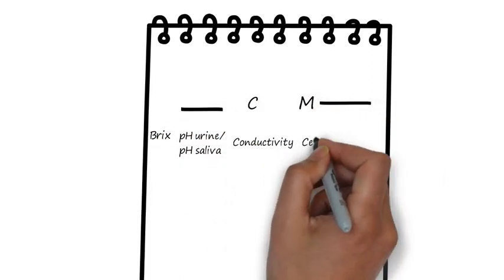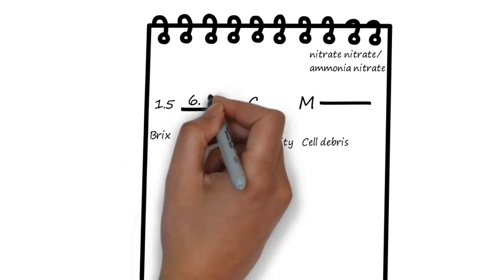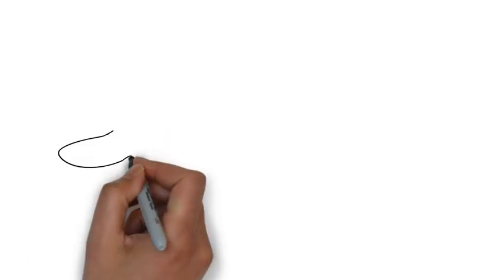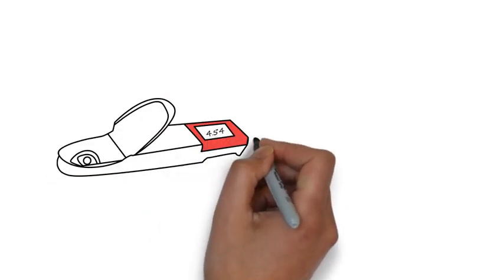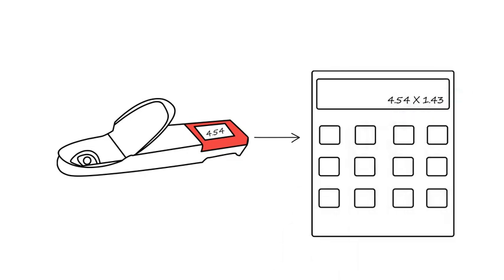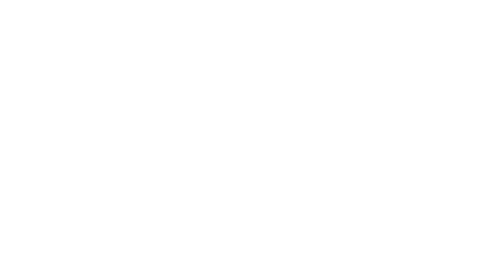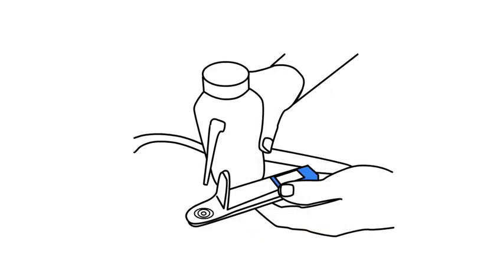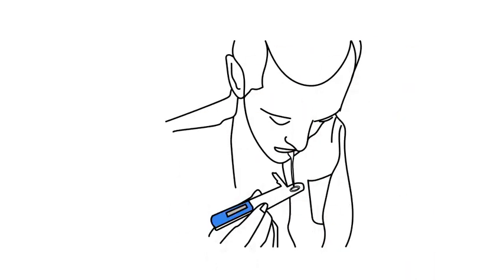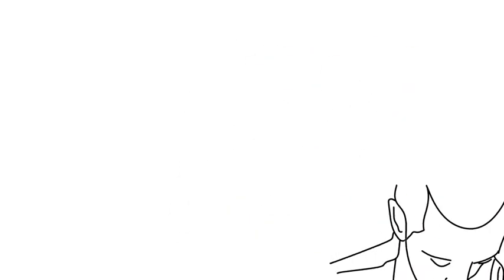Record the meter values for the bricks and urine pH, and then take the conductivity meter value and multiply it by 1.43 to determine your C value and record that. Rinse your pH meter with distilled water and then test saliva pH and record that value below the urine pH value in the equation.